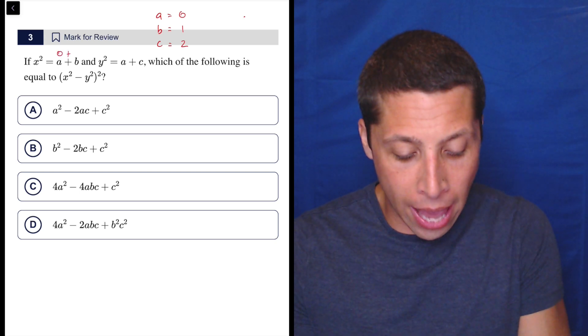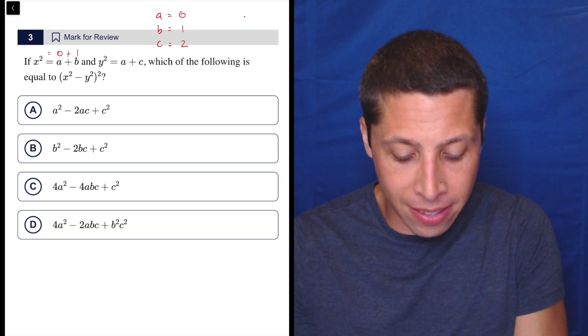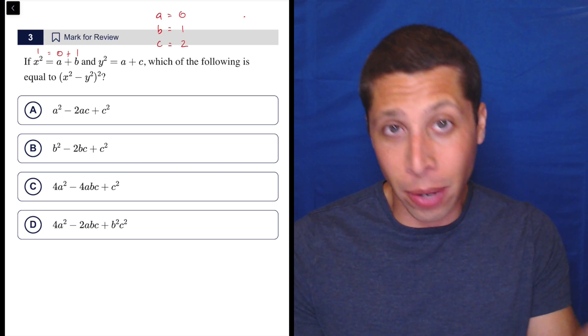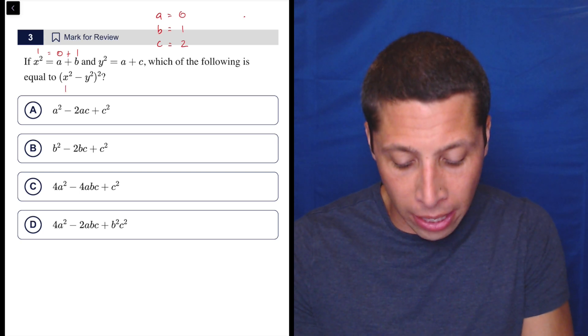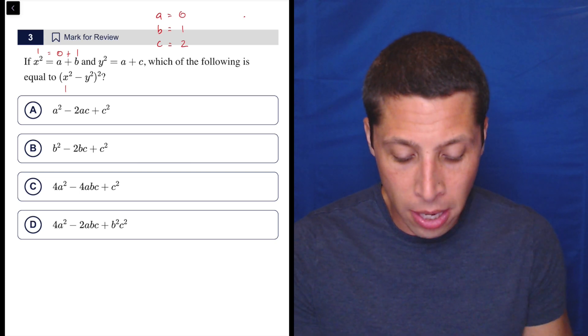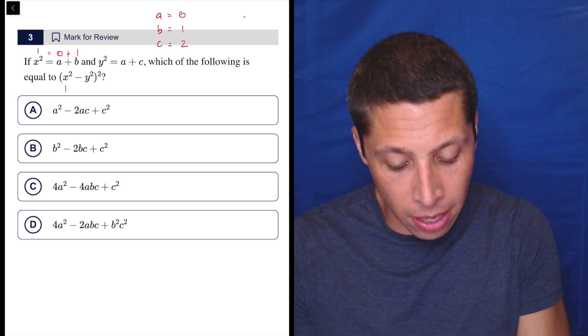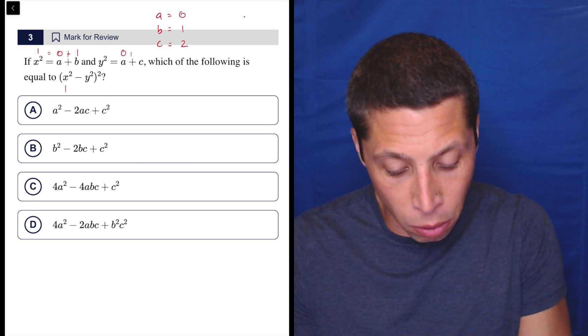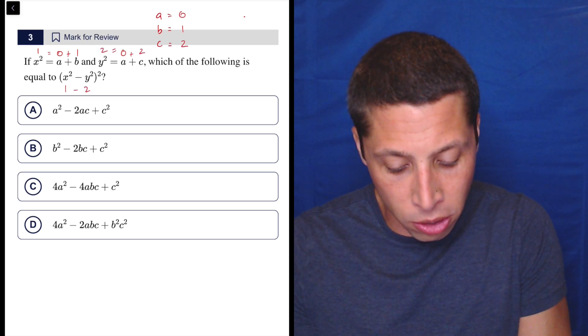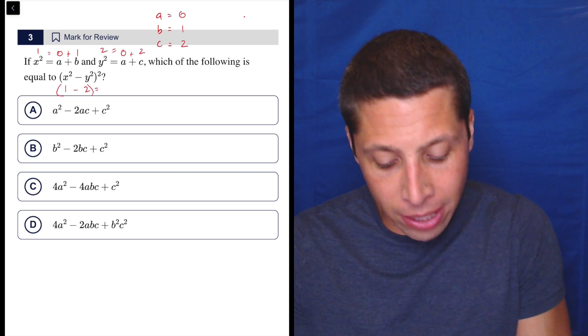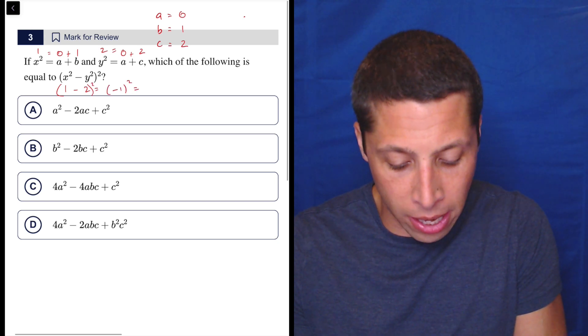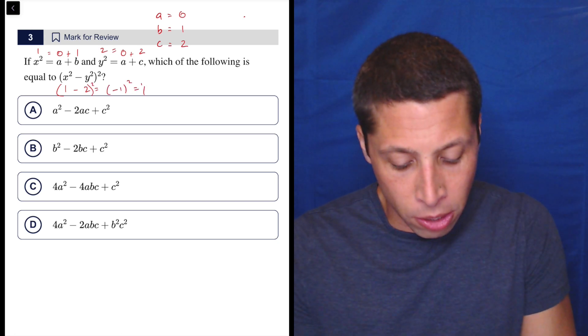So if I do 0 for A and 1 for B, then that means X squared is equal to 1. And I'm not going to bother finding X. I know I could easily, but I'm not going to bother because then I can just put the X squared in here. I'm comfortable with that substitution. If I do the same thing with the C and the Y, we would have 0 plus 2. And that's 2. So Y squared is 2. So there you go. Now I can solve this. 1 minus 2 is negative 1. Negative 1 squared is positive 1. So that's what I'm looking for.